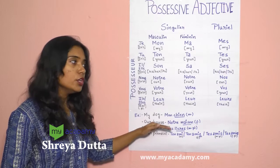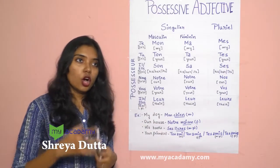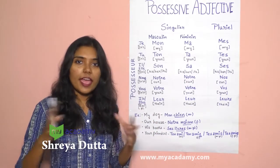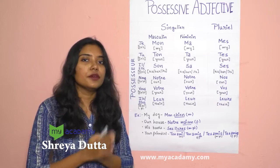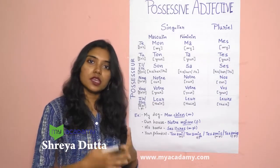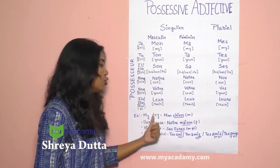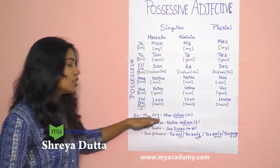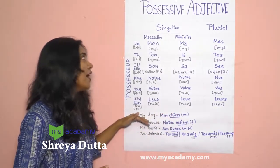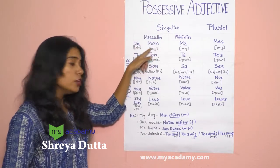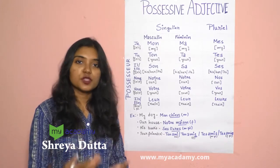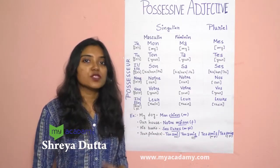For the first example: my dog. In French, all words — be it a tree, a table, a chair — have their own predetermined gender which cannot be changed. Dog is masculine, and since it is without an S it is singular. So I use the masculine singular form of my, which is mon. Dog in French is chien. So 'my dog' becomes mon chien.